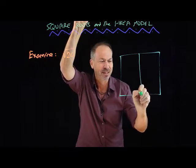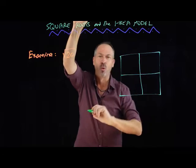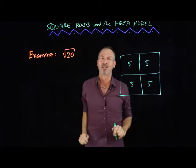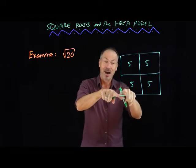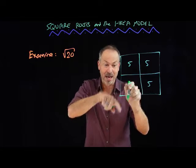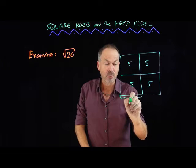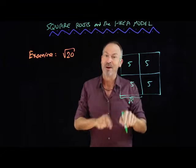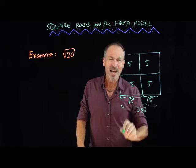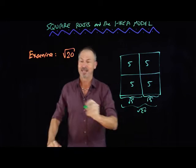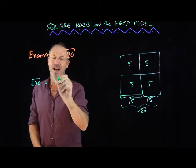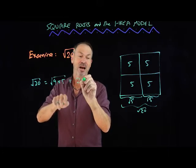Let me divide the square of area 20 into quarters: square of area 5, square of area 5, square of area 5, square of area 5 — four groups of 5. Now I can look at the base length of this square a different way. Each little square has side length given by the square root of 5. This is also root 5, and the whole side was root 20. So the area model gives a lovely way to see that the square root of 4 times 5 is really 2 times root 5.